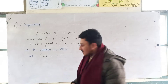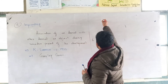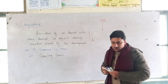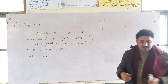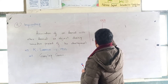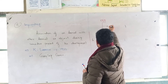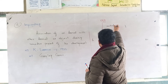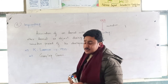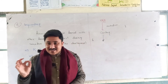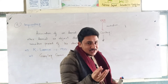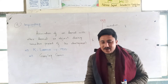The geese eggs were incubated artificially in a machine. After incubation, the goslings hatched. It is very interesting how they come to know how to follow their mother.